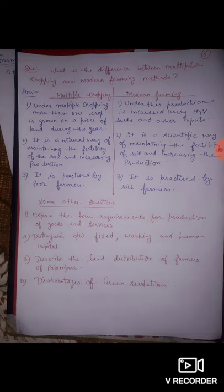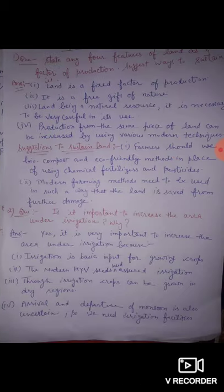Next, disadvantages of the Green Revolution — we can explain the drawbacks of high yielding variety seeds. These questions are already done and are also very important questions of this chapter.